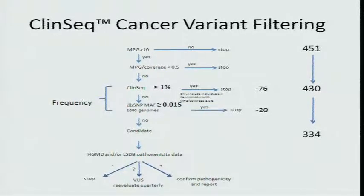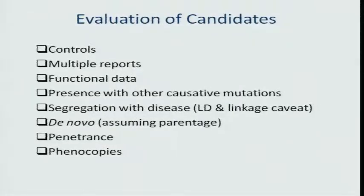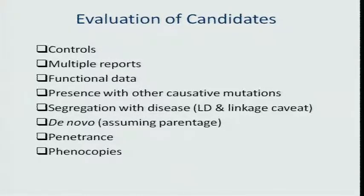We're left with other things to consider for these variants. Like everyone else, we consider lots of different kinds of data — not only frequency in cases and frequency in controls, but things like functional data, presence with other mutations, segregation, and bioinformatic predictive analyses. This is very heterogeneous, multidimensional data that varies in how it's weighted and how we think about it for every different phenotype and often for many different variants.